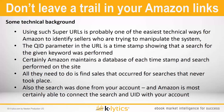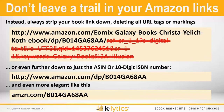Here's some technical background: using a super URL is probably one of the easiest technical ways for Amazon to identify sellers trying to manipulate the system. The qid parameter in the URL is a timestamp showing a search was performed for a given keyword. Amazon certainly maintains a database of each timestamp and search performed on the site. All they need to do is find sales that occurred for searches that never took place — and since the search was done from your account, Amazon can connect that qid with your account.